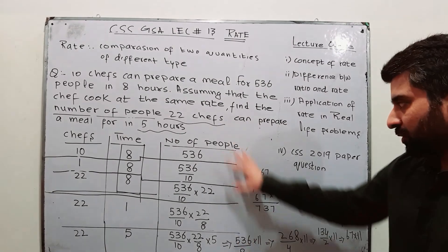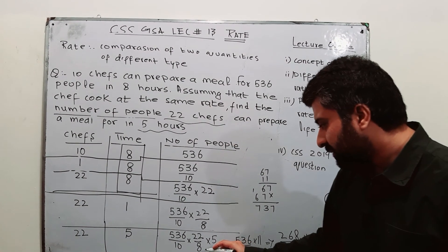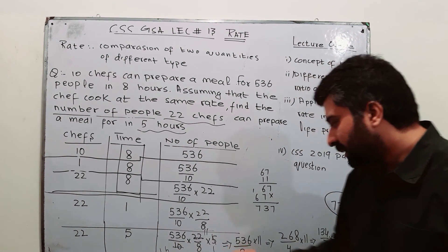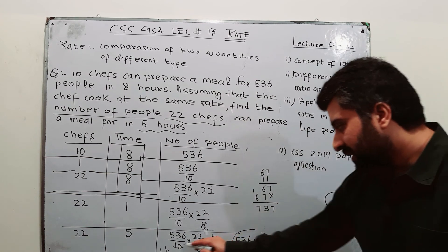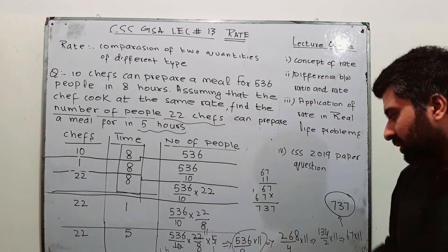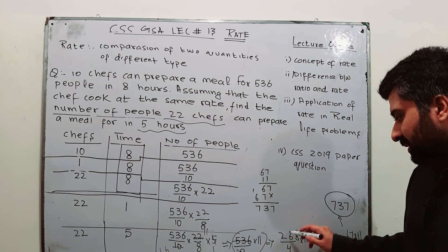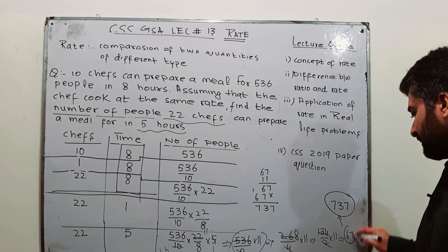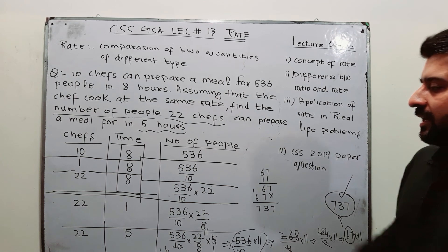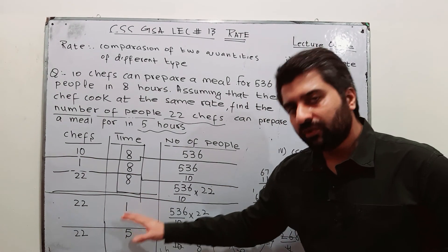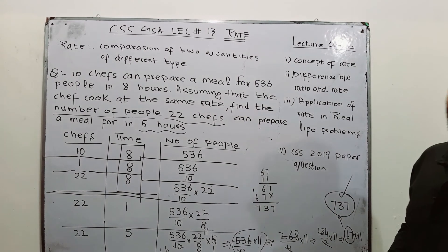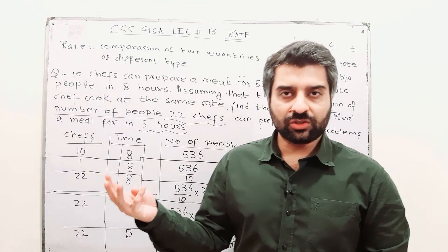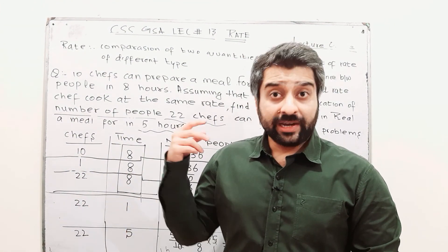Now simplify: we have 536 × (1/10) × 22 × (1/8) × 5. Cancelling 5 and 10, 2 and 22, 8 and 536, then 4 and 268, then 2 and 134, we get 67 × 11 = 737. So 22 chefs will prepare food in 5 hours and serve 737 people. This is how you attempt a question with 3 quantities — first change the chefs with time constant, then change the time with chefs constant.